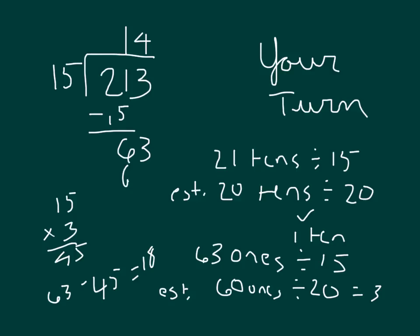And then 4 times 15 is 60. 63 minus 60 is 3. And 3 is our remainder. So 213 divided by 15 is 14 with the remainder of 3.